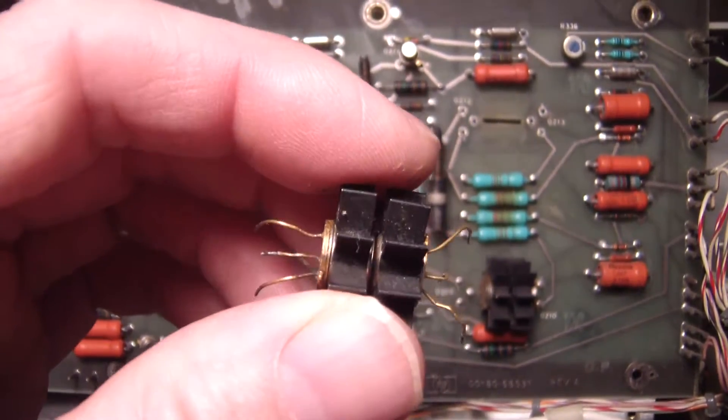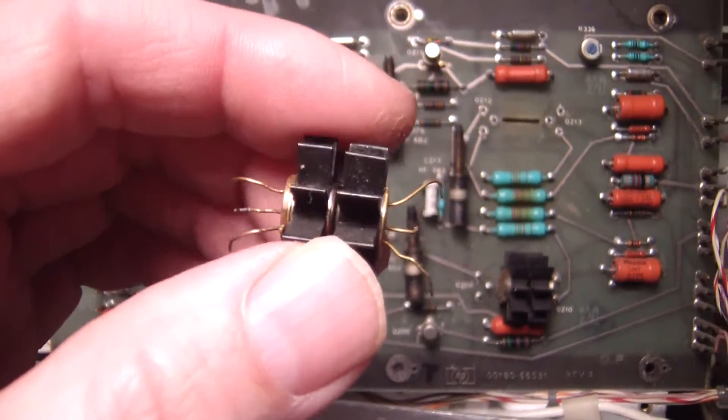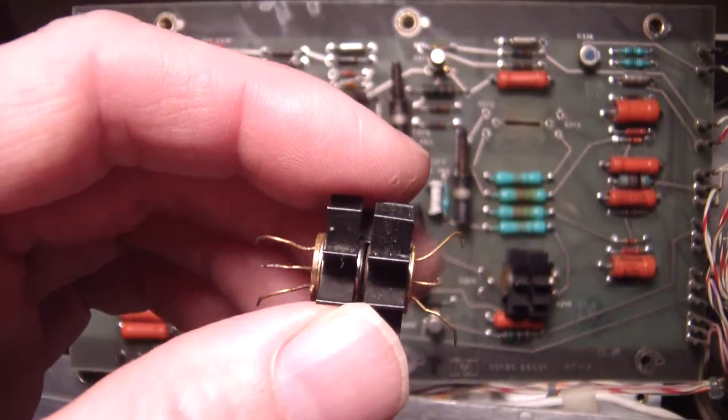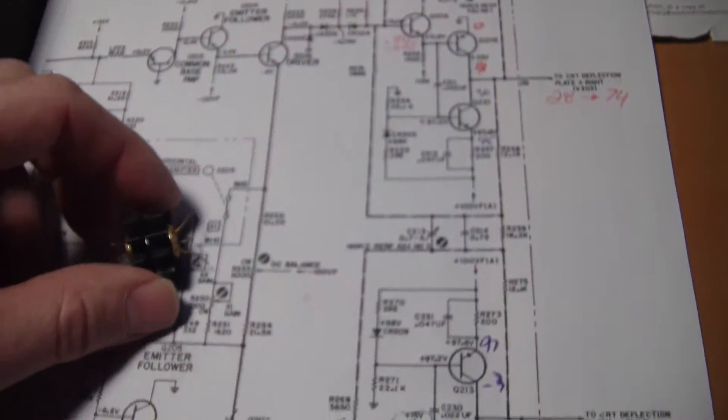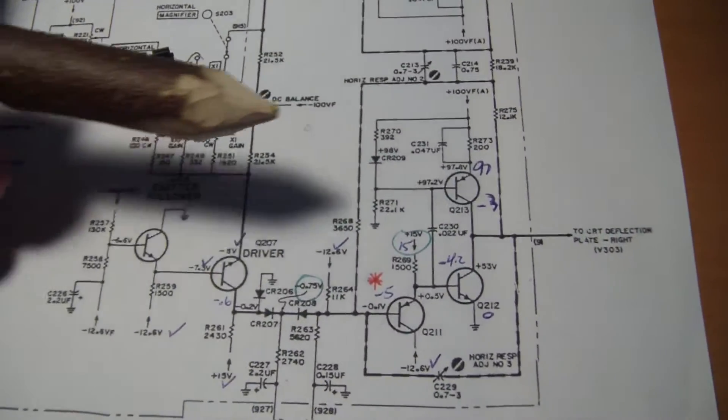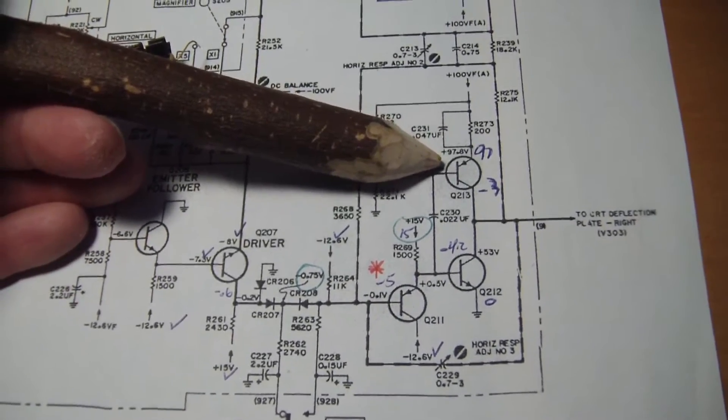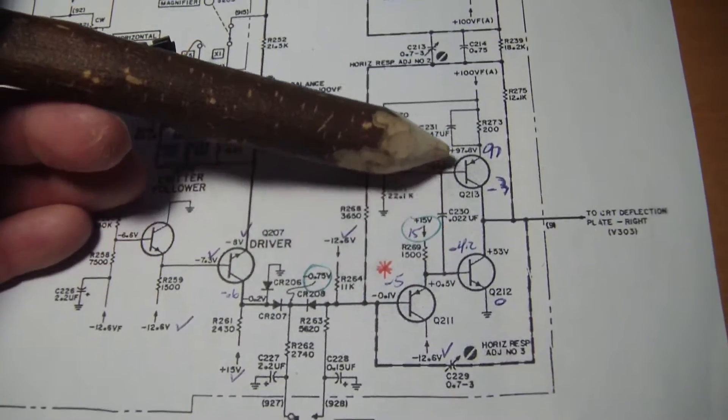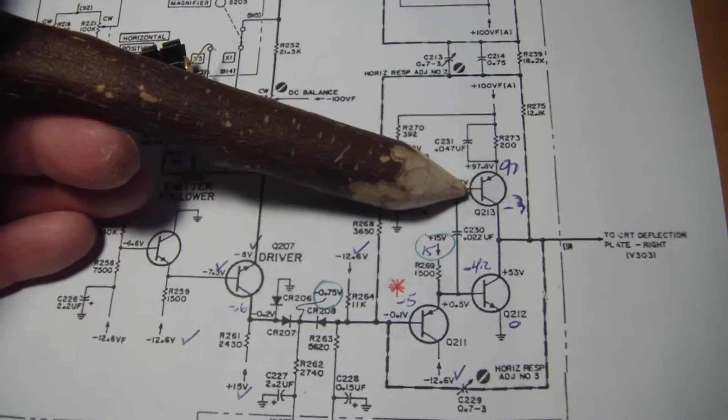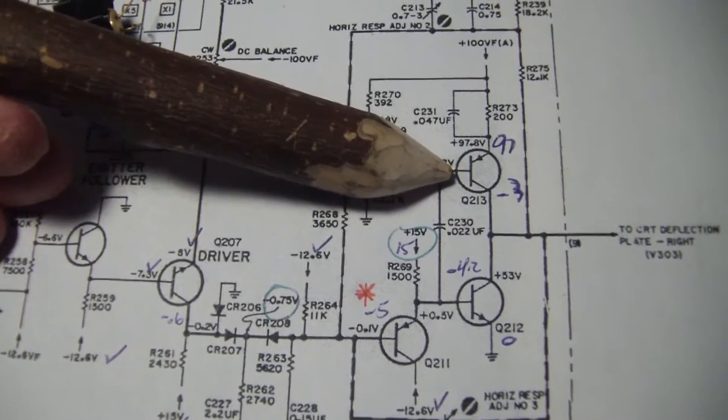So almost a doubling of the HFE between these two transistors. So I would think that looking back here at the schematic, I would think that these guys working in pair, you'd probably figure that they would want to be closer matched. Just a theory.